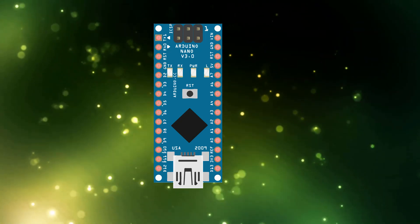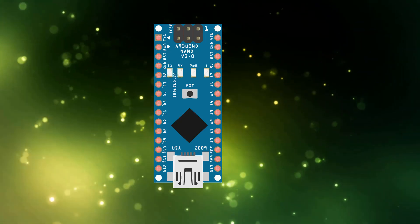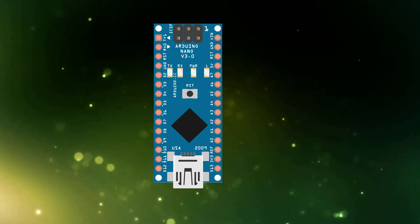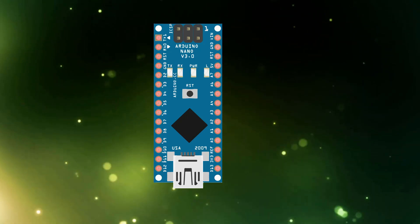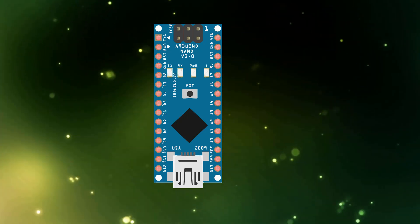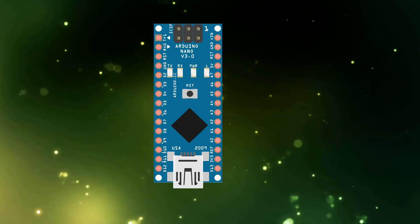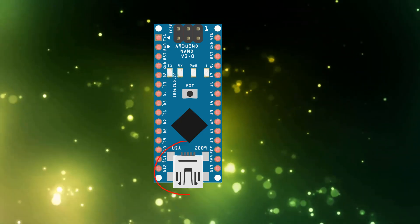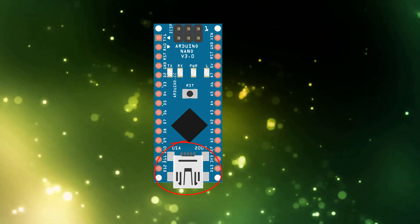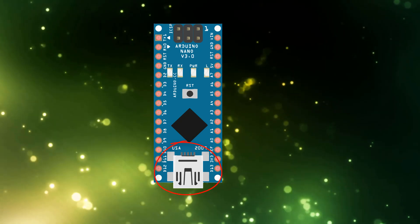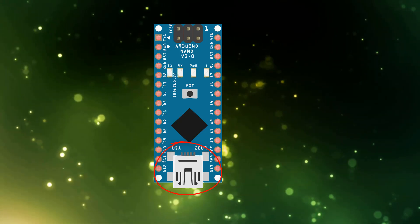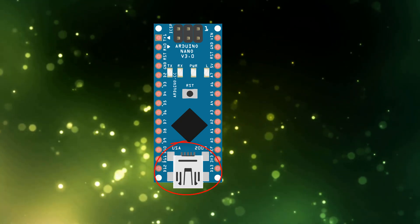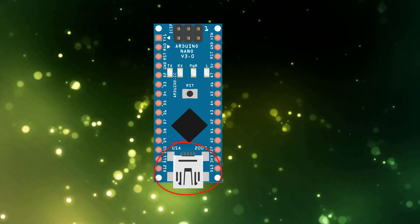The input voltage range of Arduino Nano varies from 7V to 12V, while the operating voltage is 5V. It doesn't have a DC power jack as in Arduino Uno, but it has a mini USB port which is used for powering up as well as uploading code to the Arduino Nano.